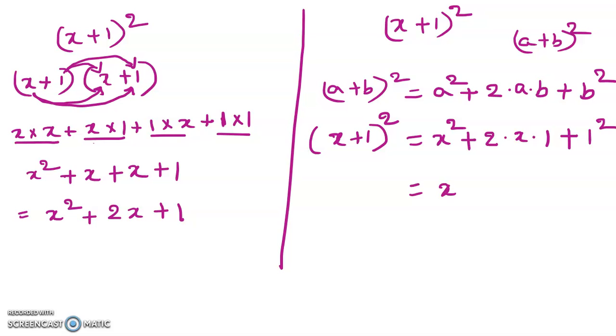If we simplify this, x² + 2(1)(x) is 2x + 1², which equals x² + 2x + 1.